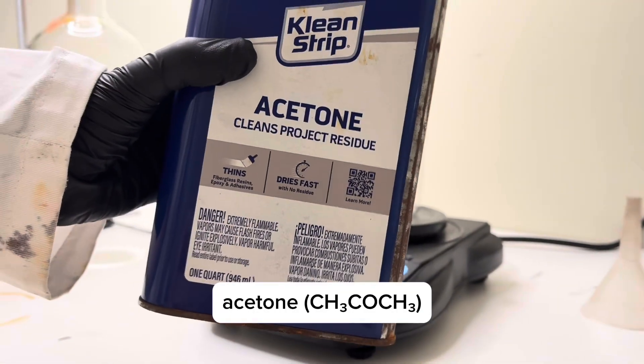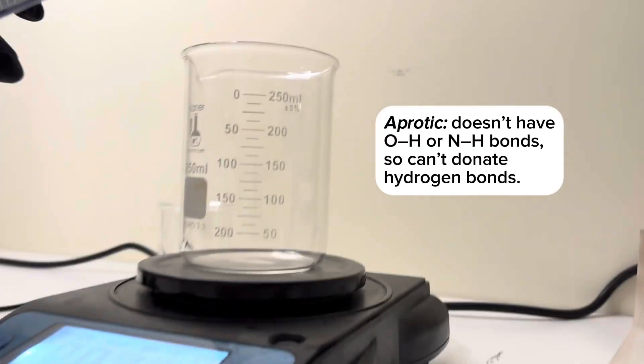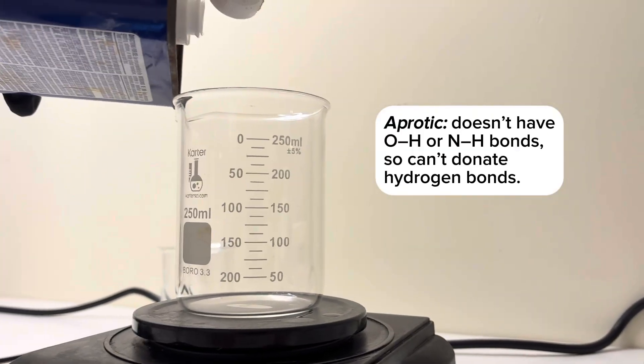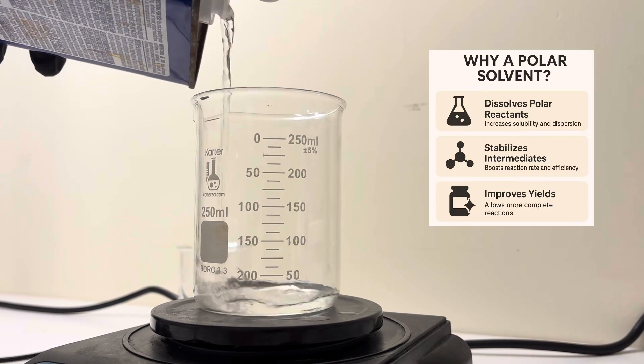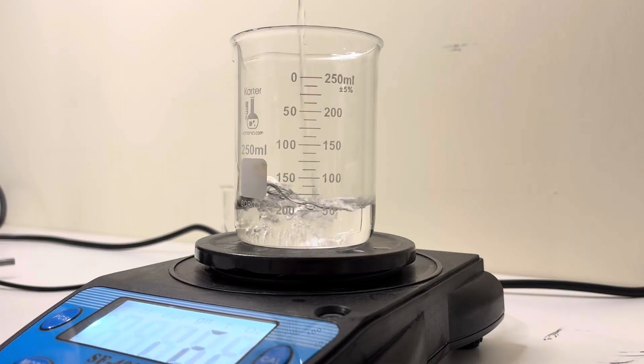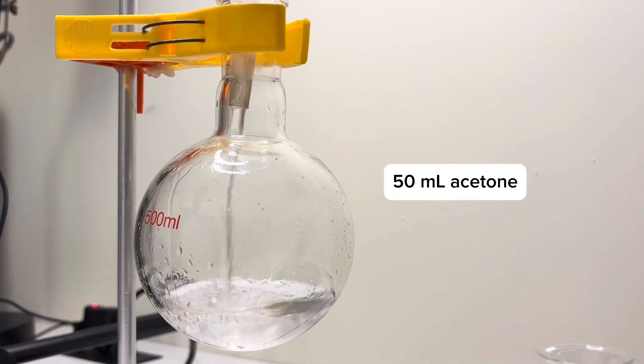Here's acetone for the solvent. It's aprotic so it doesn't donate hydrogen bonds and interfere. And it's polar, which boosts solubility, mixing, and reaction control. I'll use 50 milliliters.